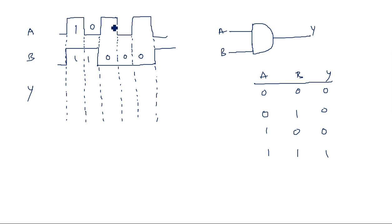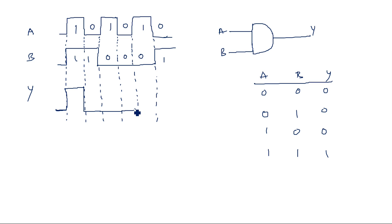Initially every output is zero. In the first cycle we have one and one, so output is one. Followed by one zero — input is zero — so output is zero. Again zero one, zero — if any one of the inputs is zero, output is zero. This is the output waveform for the assumed input waveforms. Likewise we can take any type of input waveforms and draw the output waveform based on the truth table, which is very important.